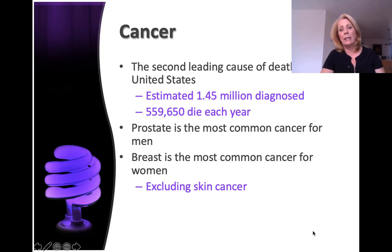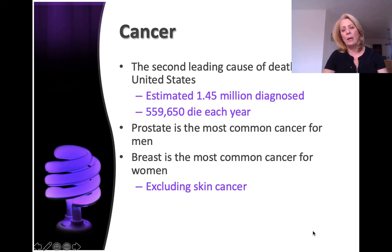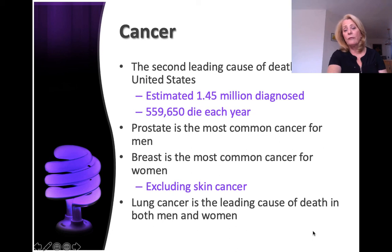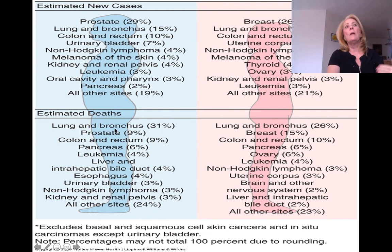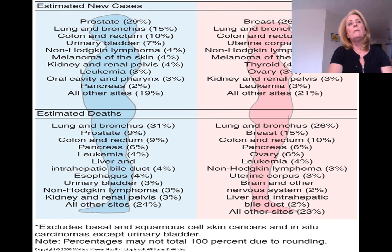This does not include skin cancers, because some skin cancers are what we call in situ — they haven't gone through the basement membrane and aren't spreading throughout the body. Lung cancer is the leading cause of death for both men and women, even though prostate and breast cancer are the most common forms. Colon and rectal cancer cases are also going up in the United States, especially among young people under the age of 40.